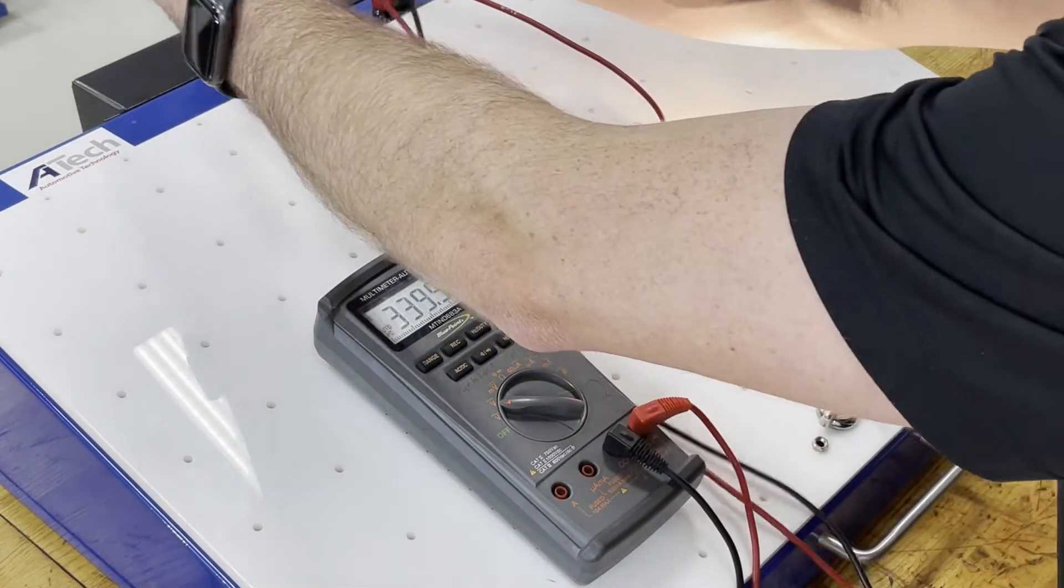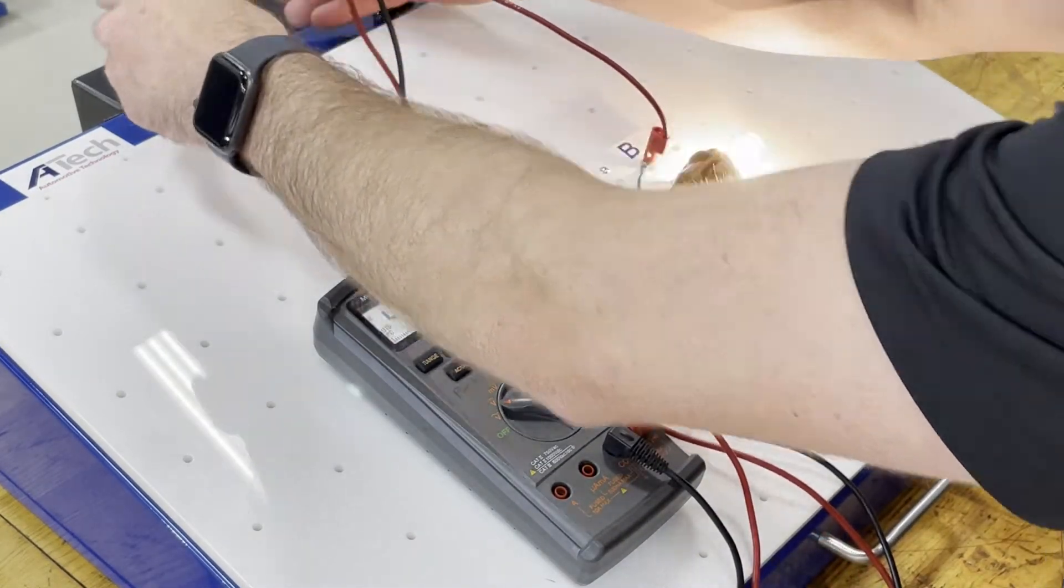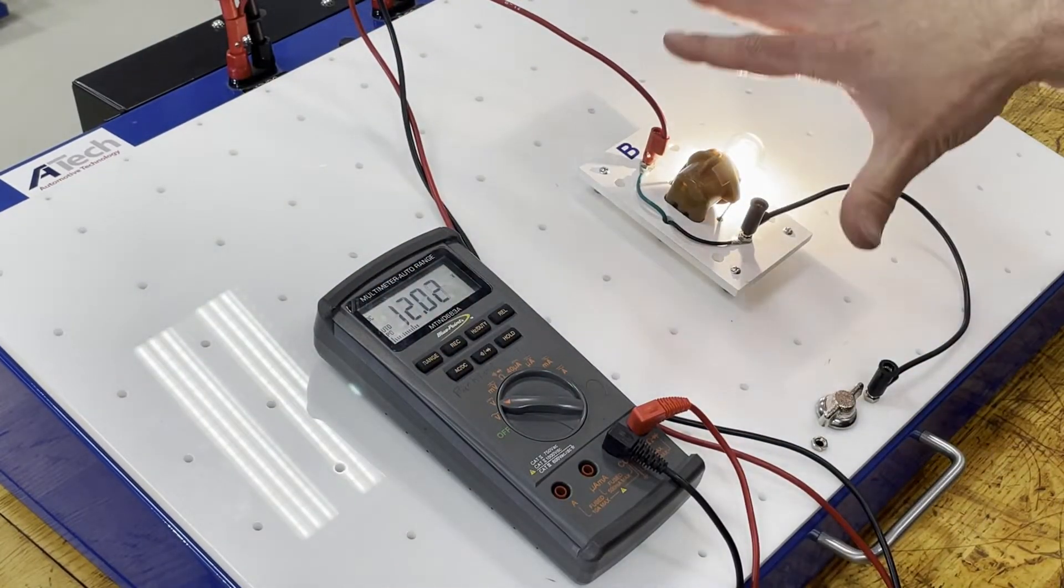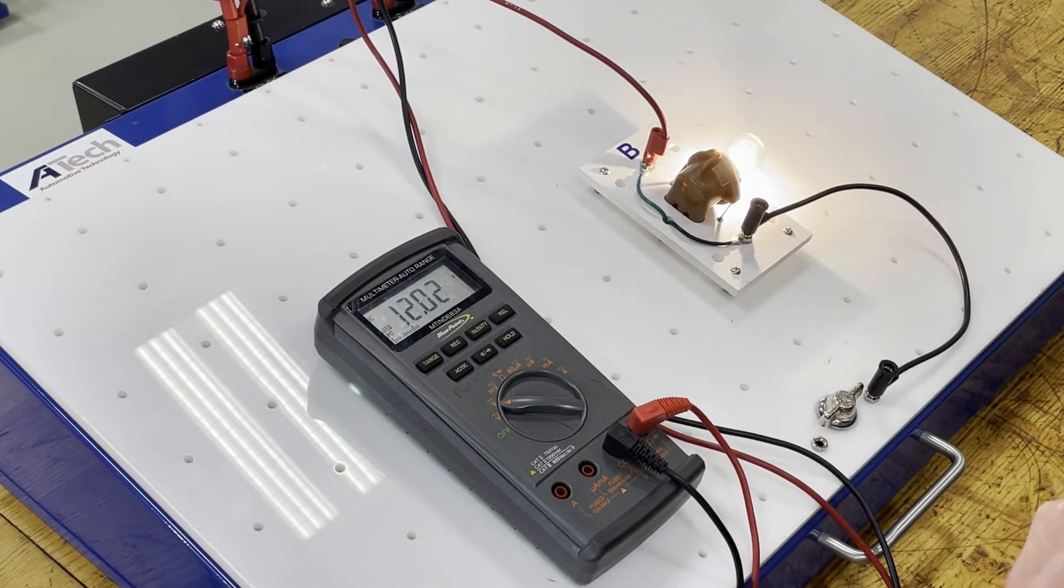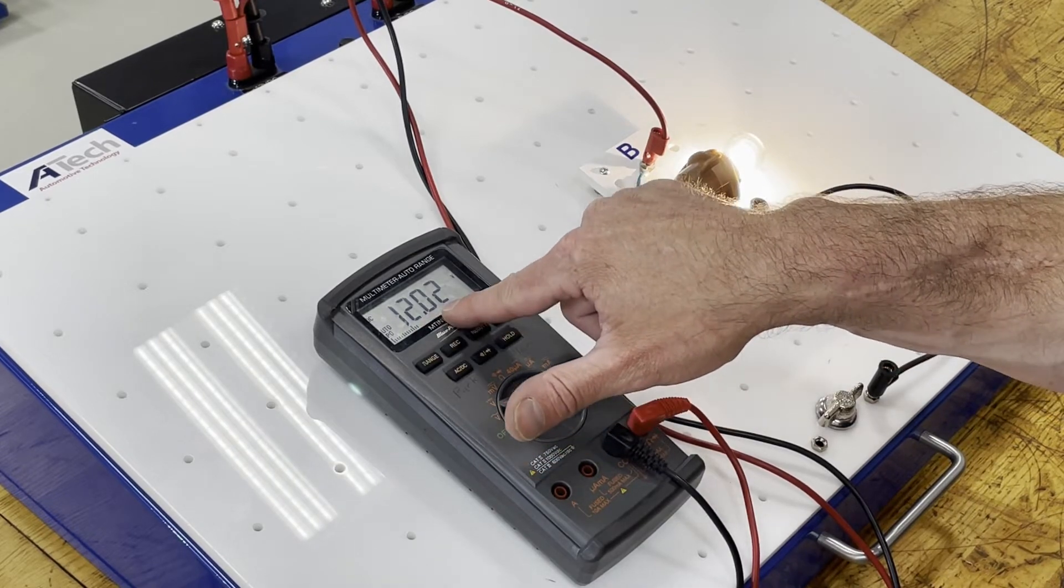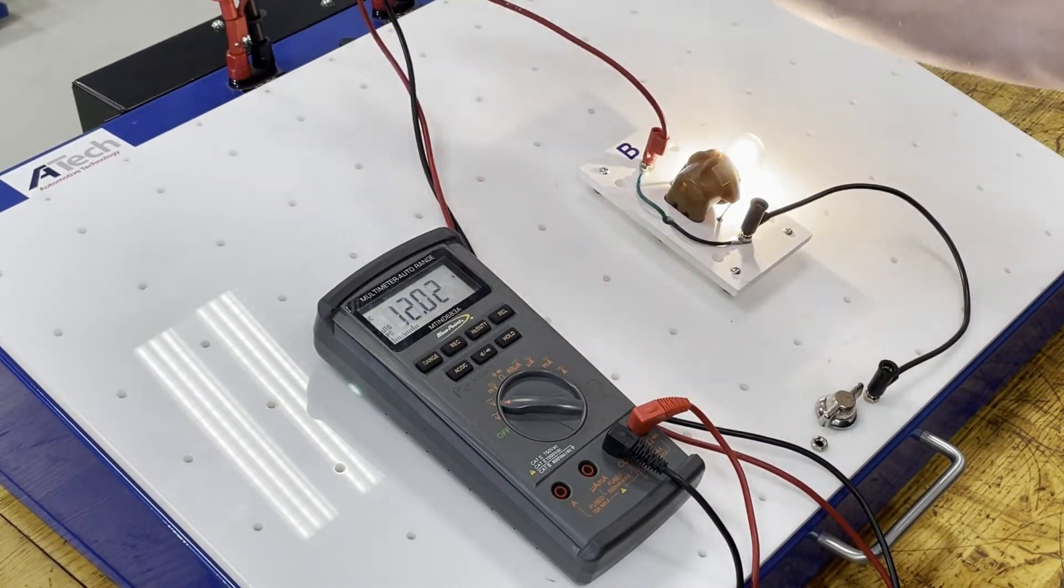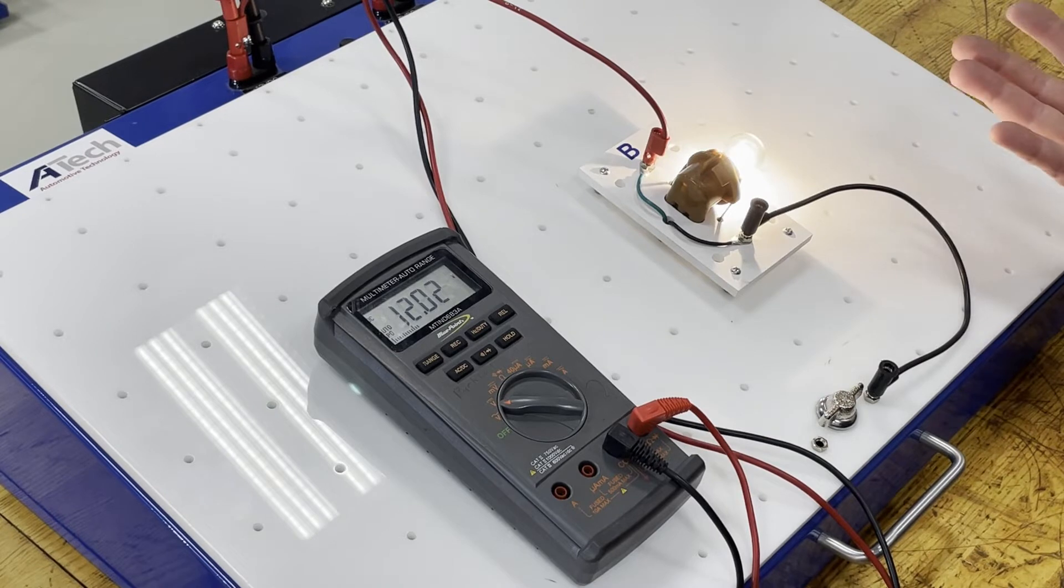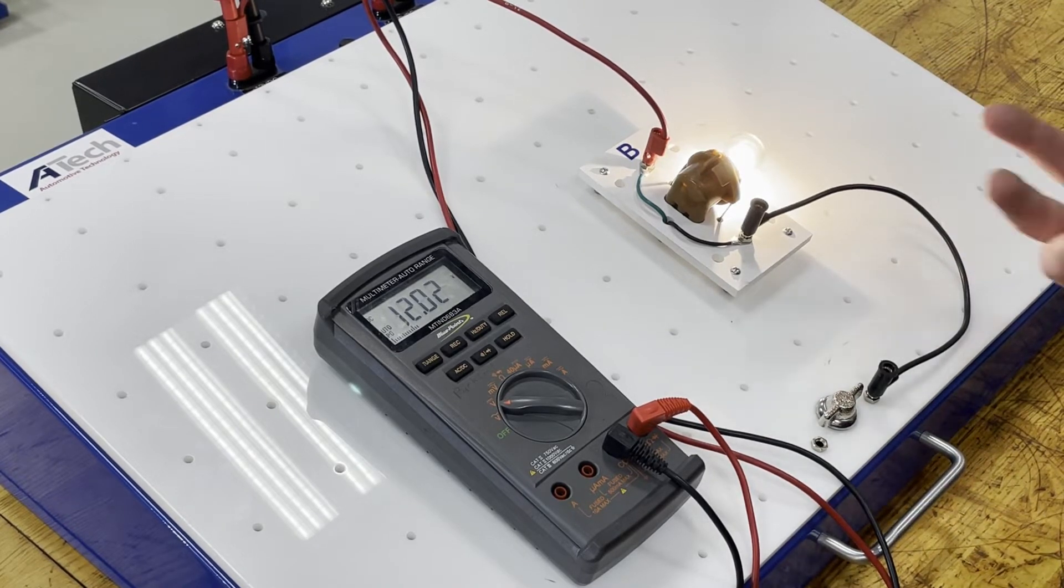I can do available voltage testing where maybe I just go to the top power supply of my board in this case or the car's battery if we're working on a vehicle and this is the available voltage. So there's 12.02 volts available from the power supply unit to whatever I utilize it for. That's just available voltage.